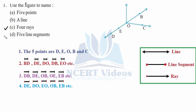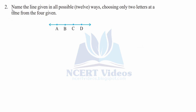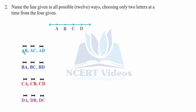Question two: name the line given in all possible 12 ways, choosing only two letters at a time from the four given points. We can write it in 12 different ways. From point A, we can point to three directions: AB, AC, and AD.